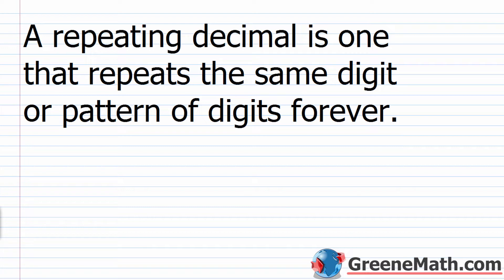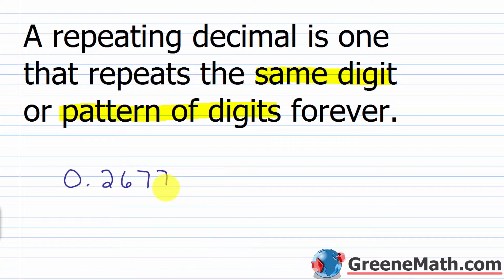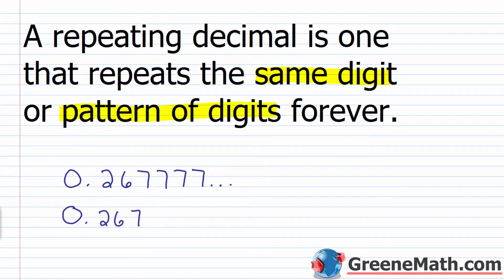So we'll start out by asking: what is a repeating decimal? A repeating decimal is one that repeats the same digit or pattern of digits forever. For example, something like 0.26777... where the 7 repeats forever. We can put three dots after the 7 to indicate it continues, or write it as 0.267 with a bar over the 7. You put a bar over the digit or series of digits that repeats forever.